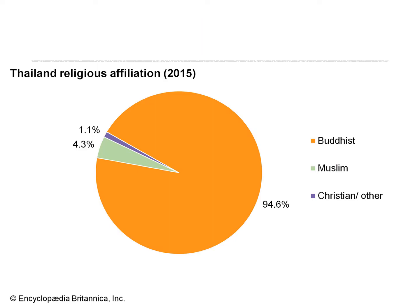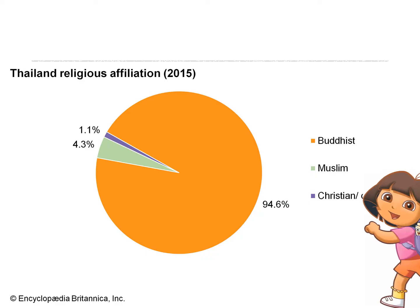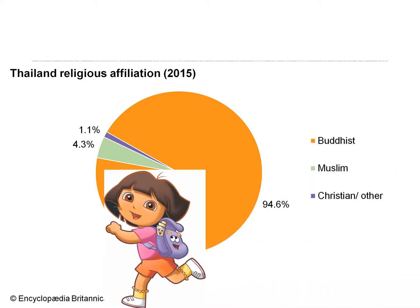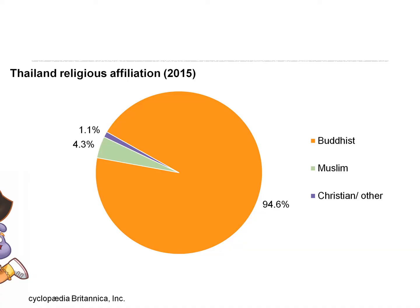In Thailand, 94.6% of the population practices Buddhism. Is Buddhism a centripetal, unifying force, or a centrifugal, divisive force? In some countries, a state religion can be a unifying force. Buddhism is a unifying force in Thailand, as is Hinduism in Nepal, Judaism in Israel, and Islam in Pakistan.